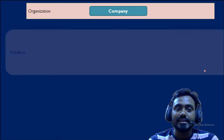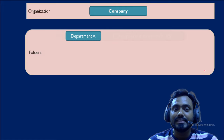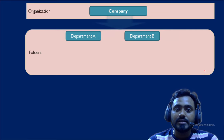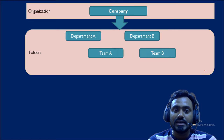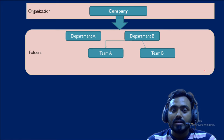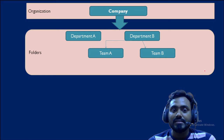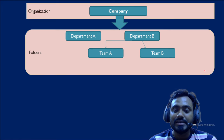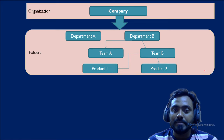The first layer is the organization — this is the company. The second layer is folders; you can think of these as departments under the company. Under the department we have different teams. So the hierarchy starts from the top — company — then departments, then teams.